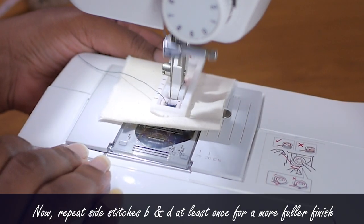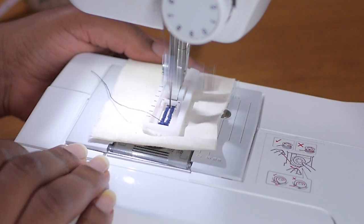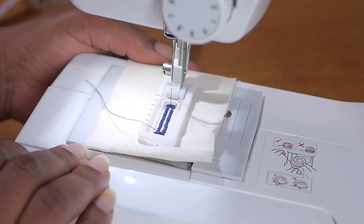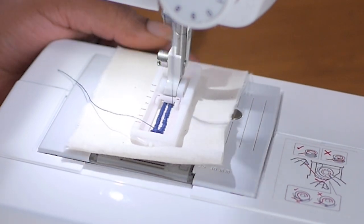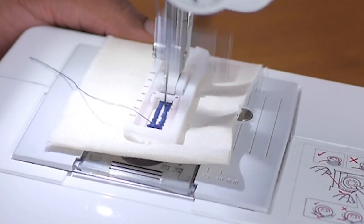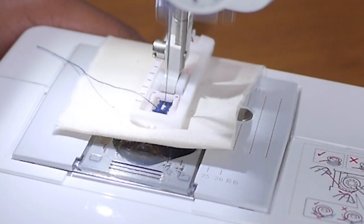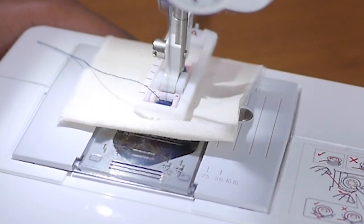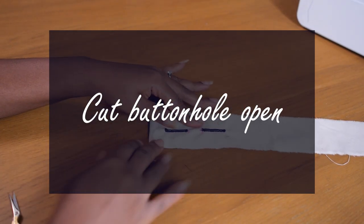But I like to repeat this step twice because it just creates a more fuller stitch that looks nicer. I like to go back at least once or even twice if the thread is thin or if I just want it to look more rounded and fuller. So once you get all the way to the end, the buttonhole is complete and I'm just going to take this out and cut the hole open.